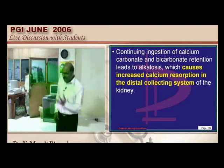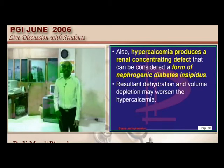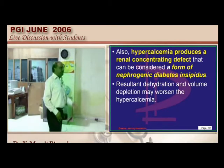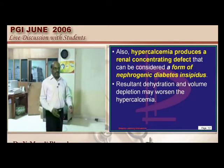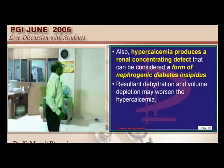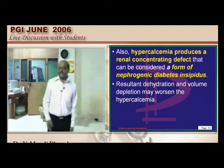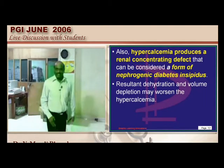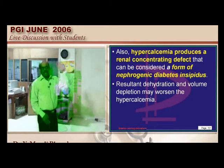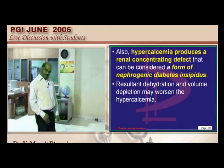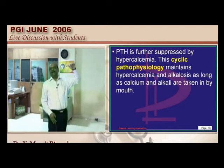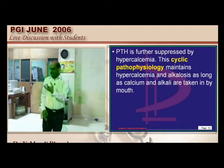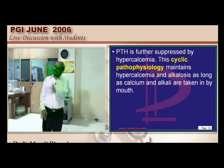Hypercalcemia from milk alkali syndrome affects the renal concentrating mechanism, causing nephrogenic diabetes insipidus-like state. The patient loses large amounts of water in urine, becomes dehydrated and volume-depleted. This dehydration further worsens hypercalcemia (less solvent, higher concentration of calcium), creating a vicious cycle.